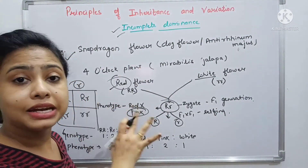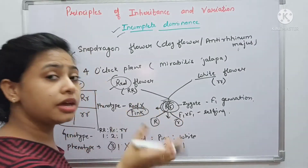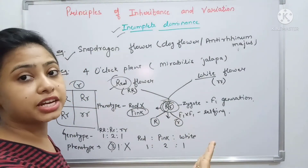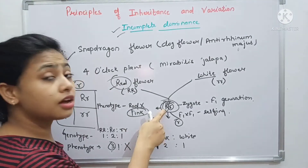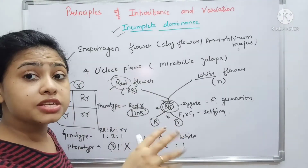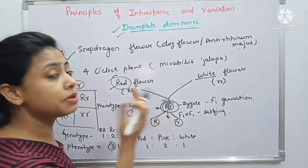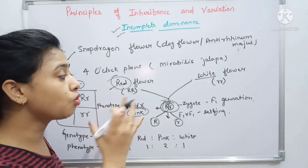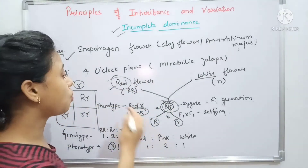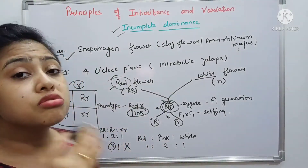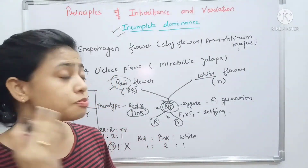This is the basis of Mendel being challenged — both characters are blending and generating a third character. Because the dominance of capital R is not completely expressed, small r is also showing some characters. They are blending together and the third character — pink — is being produced. This is what incomplete dominance is about.